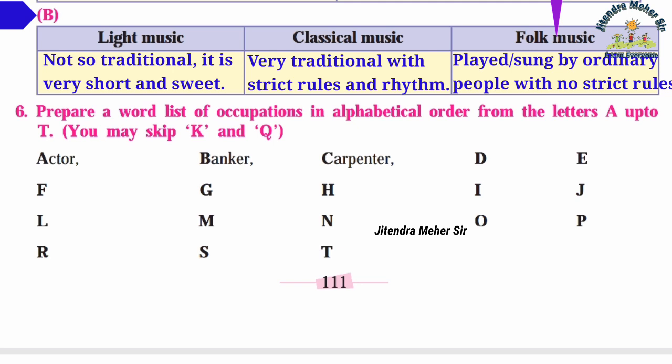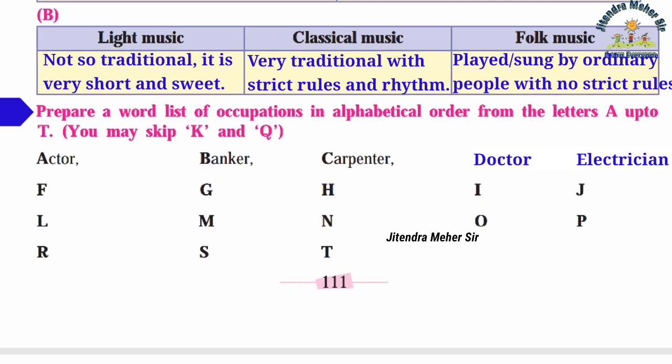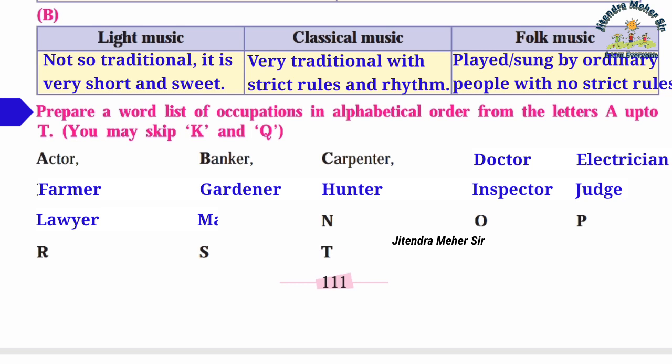Activity six: Prepare a word list of occupations in alphabetical order from A to T, skipping K and Q. A — actor, B — banker, C — carpenter, D — doctor, E — electrician, F — farmer, G — gardener, H — hunter, I — inspector, J — judge, L — lawyer, M — magician, N — nun, O — operator, P — poet, R — reporter, S — soldier, T — tutor.